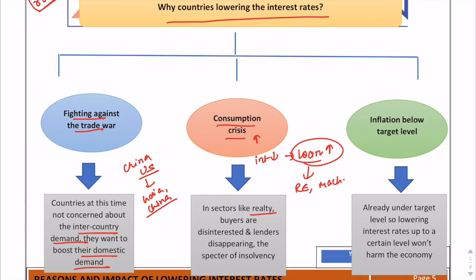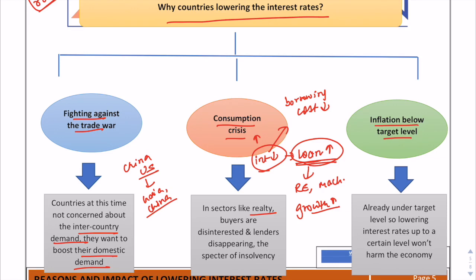By reducing interest rates, the demand for loanable funds increases because the borrowing cost for taking loans decreases and people find it beneficial to take up loans. The next reason is inflation is below the target level. This is an opportunity for central banks to reduce interest rates and bring inflation up to a decent level. Since inflation is below target, it won't harm the economy if the inflation rate rises, as interest rate and inflation are inversely related.